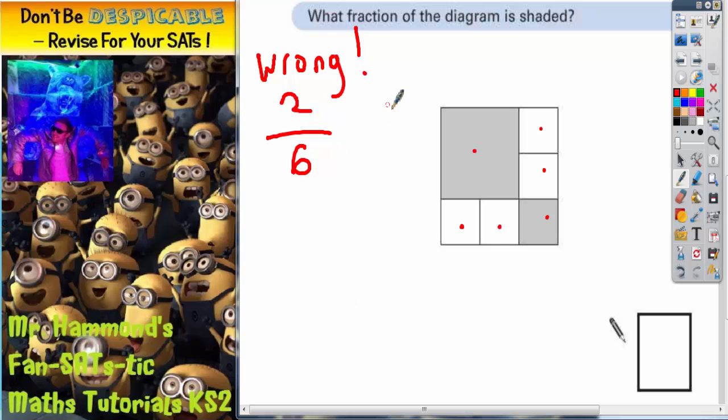Now that is very definitely wrong. The question is why is it wrong? Well the problem is, any time you use that kind of method all the shapes that you count must be the same size. Now 5 of these shapes are the same size but this square here is much bigger. So saying that it's 2 squares out of 6 is incorrect because not all the squares are the same size.